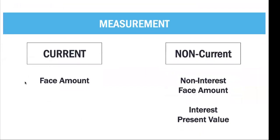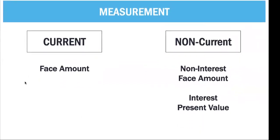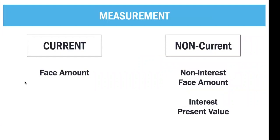Lastly, we talk about your measurement of your liabilities. Current liabilities are measured at face amount — whatever is the amount of that liability, say 10,000, the liability is measured at 10,000. But if it is non-current and non-interest bearing, you measure it at present value. If it is interest bearing, you measure it at face amount — just like your assets.